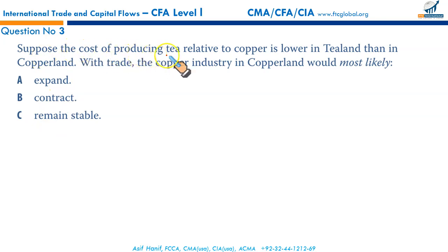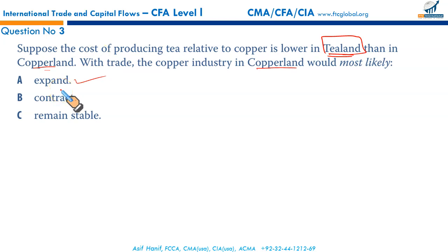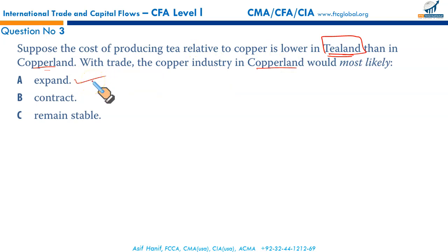Question number three: suppose the cost of producing tea relative to copper is lower in tea land than in copper land. With trade, what would happen to the copper industry in copper land? Tea land can produce tea at a relatively lower cost, and copper land can produce copper at a lower cost than tea. These countries can trade and both will benefit. Copper land will expand copper production and tea land will expand tea production — the copper industry in copper land benefits from trade. That makes A the correct option.